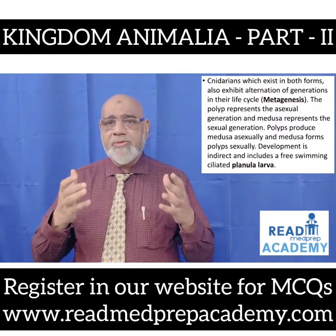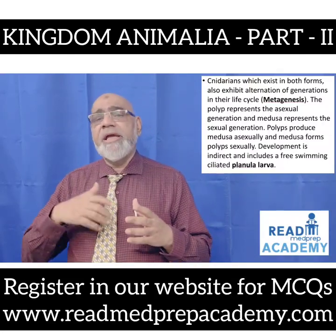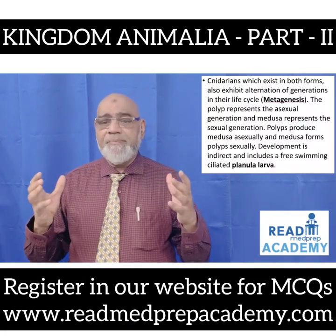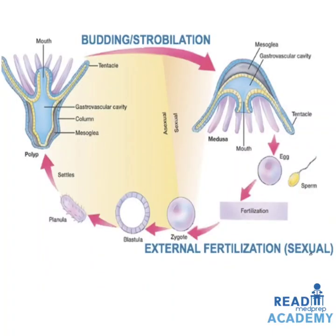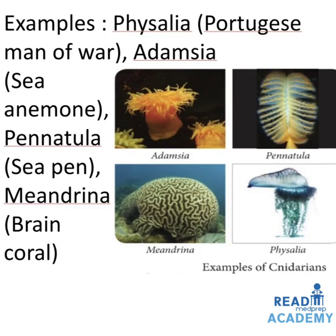Cnidarians that exist in both forms also exhibit alternation of generations in the life cycle, called metagenesis. The polyp represents the asexual generation and medusa represents the sexual generation; polyps produce medusa asexually and medusa forms polyps sexually. Development is indirect and includes a free-living ciliated planula larva. In this image you can see the life cycle, where the polyp undergoes budding and strobilation to form the medusa, which produces eggs and sperm that fertilize to form a zygote, developing into a blastula, then a planula larva, which develops into a polyp.